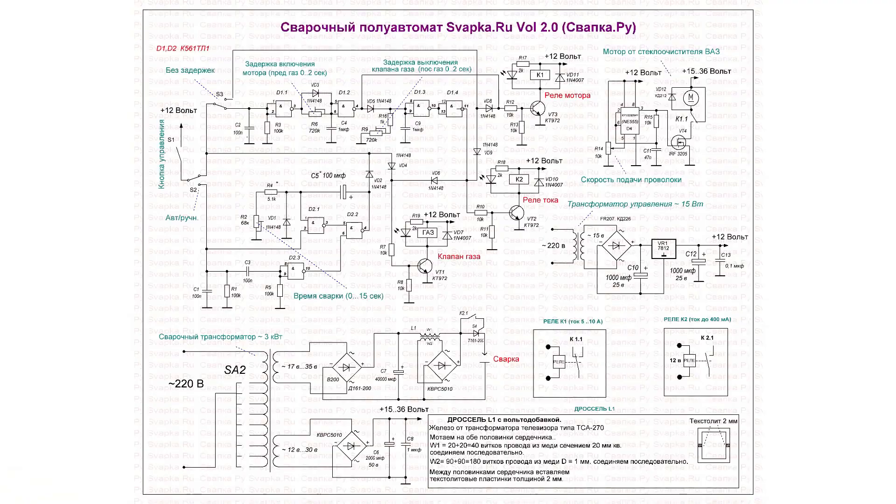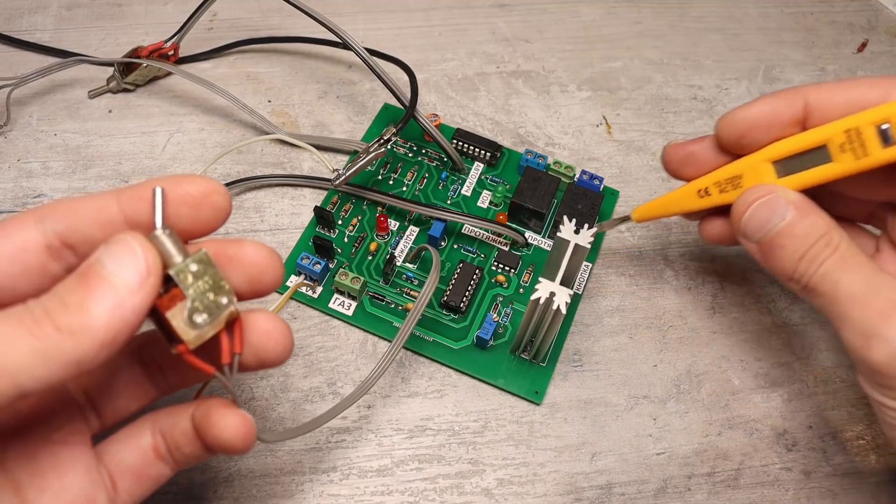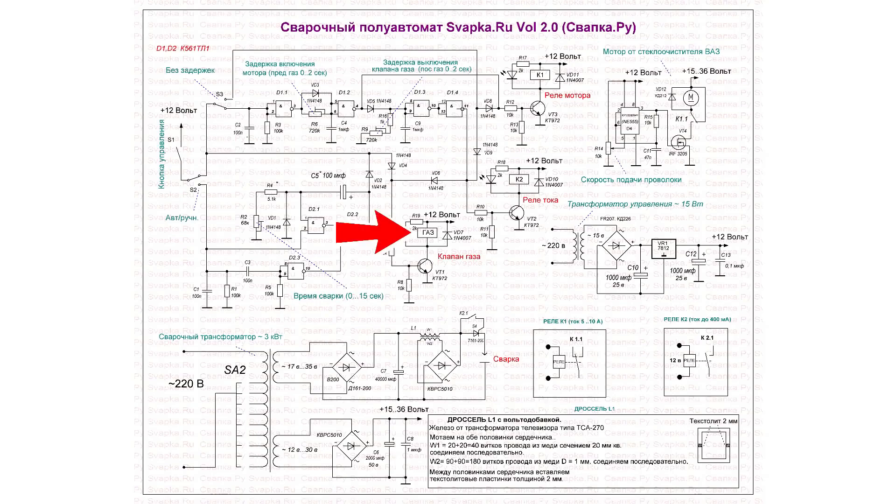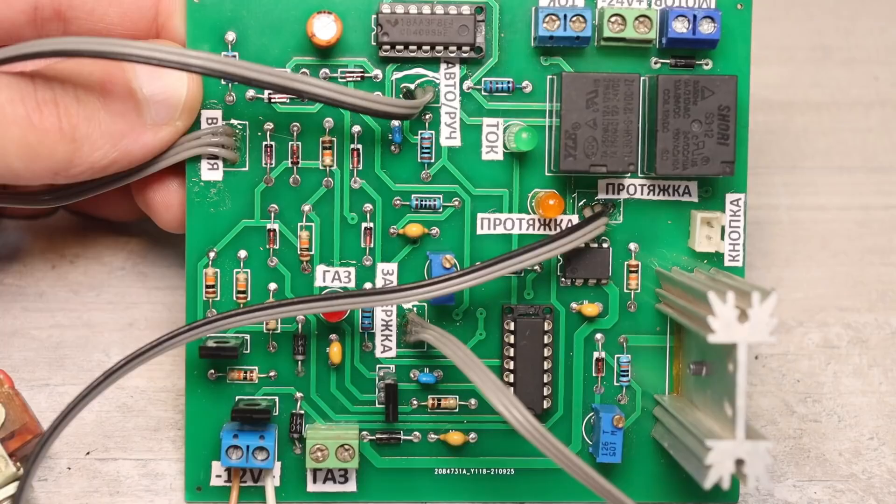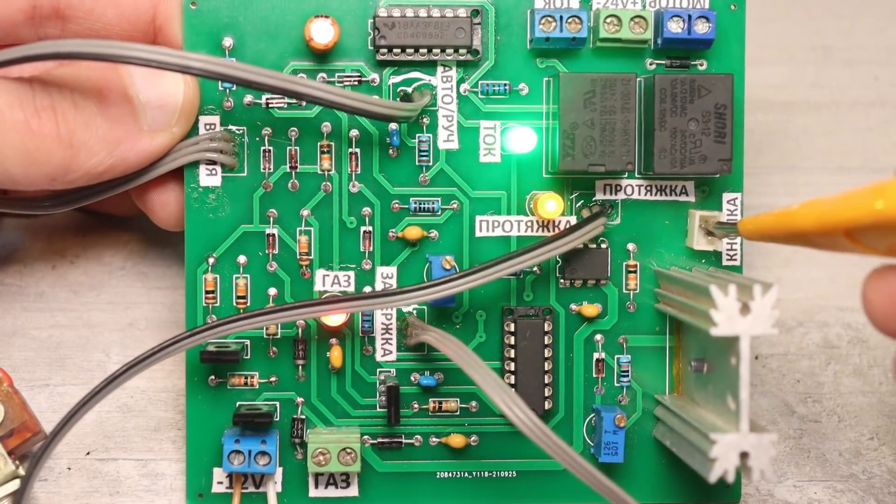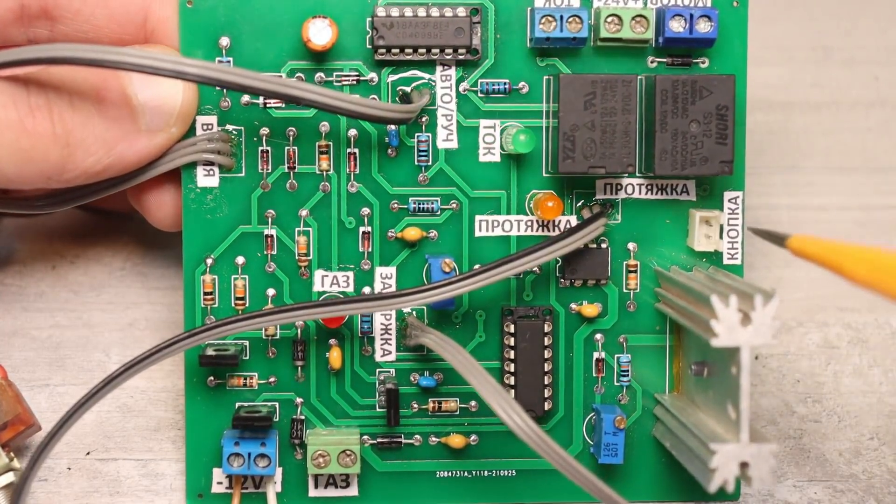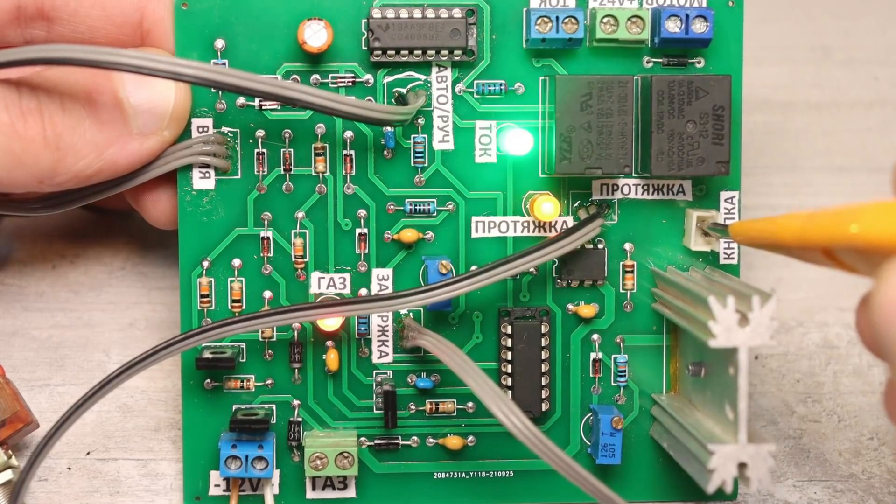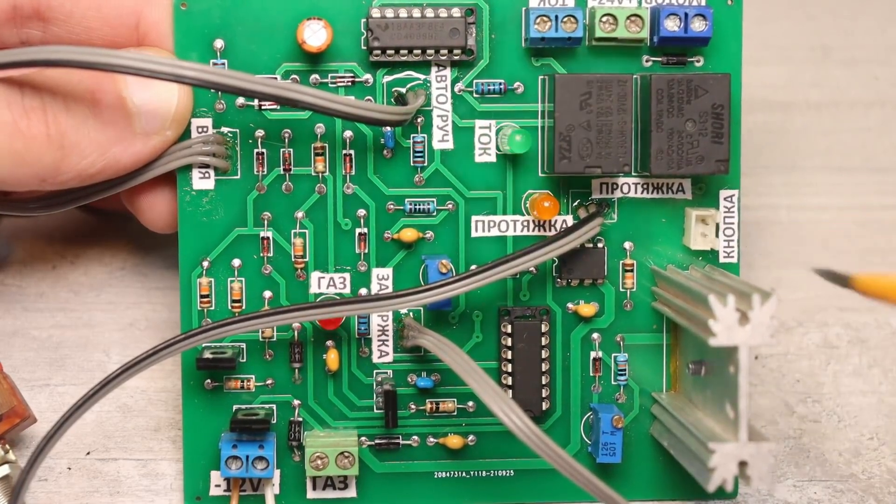You can even disable these delays entirely if you are working with flux cord wire. When you press the button on the torch first, carbon dioxide is supplied. After the delay time expires, there is an automatic activation of the welding current in the feed motor. If you release the button, the current and feed are turned off, and finally the gas valve.